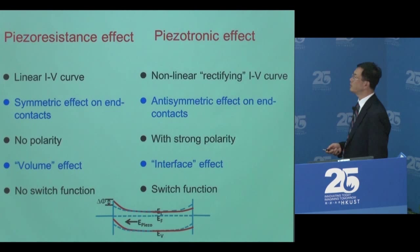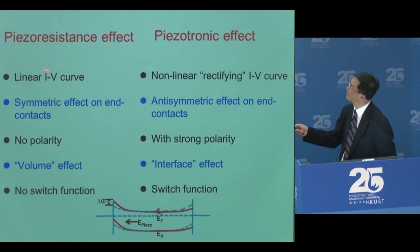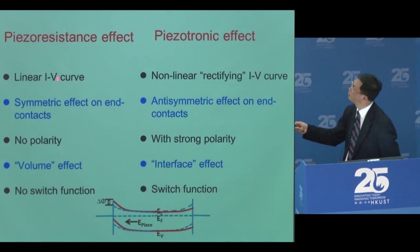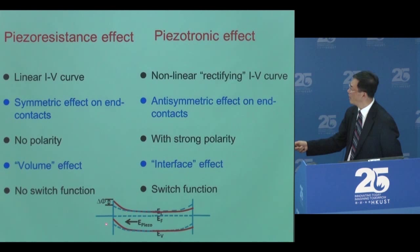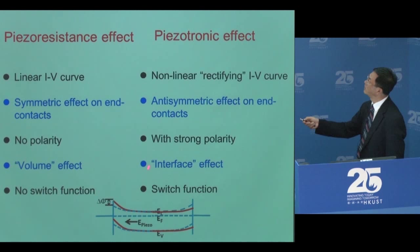What's the difference from the piezoresistive effect? Piezoresistance gives a linear, symmetric curve — resistance change regardless of bias voltage direction, like a resistor. The piezotronic effect gives a non-linear curve that depends on voltage direction: at one end the Schottky barrier is raised, at the other end lowered — asymmetric tuning. This has strong polarity; piezoresistance has no polarity. Piezotronics is an interface effect; piezoresistance is more of a volume effect. Piezotronics can be a switch; piezoresistance cannot.